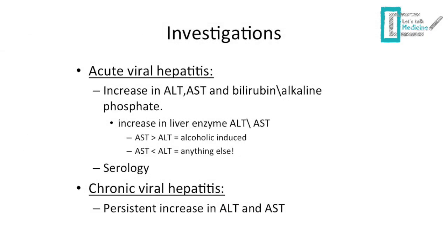For investigation, you need to request liver enzymes and serology. If both AST and ALT are elevated, look at the AST to ALT ratio: if AST is higher, it is probably alcoholic-induced hepatitis; if ALT is higher, it is more likely anything else, including viral hepatitis. The same investigation approach applies to chronic viral hepatitis.